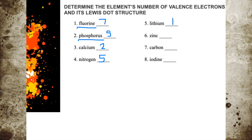Zinc — where do you think zinc falls? Can you tell me the number of valence electrons for zinc? That's right — the valence electrons for zinc will be two. How about carbon? Can you tell me how many valence electrons carbon will have? That is correct — carbon will have four valence electrons. How about iodine? That is correct — iodine will have seven valence electrons.